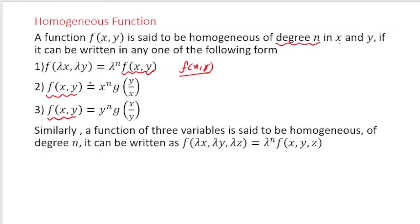There are three different ways to check homogeneity. We can also write f(x, y) as xⁿ·g(y/x) or as yⁿ·g(x/y). For functions of more than two variables, we replace each variable by a multiple of λ. For example, with three variables x, y, z, if f(λx, λy, λz) = λⁿ f(x, y, z), then the function is homogeneous of degree n.